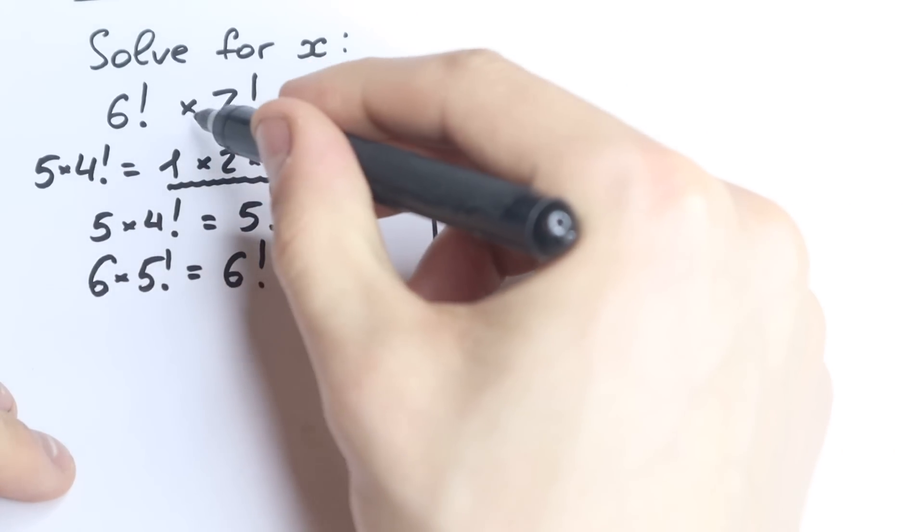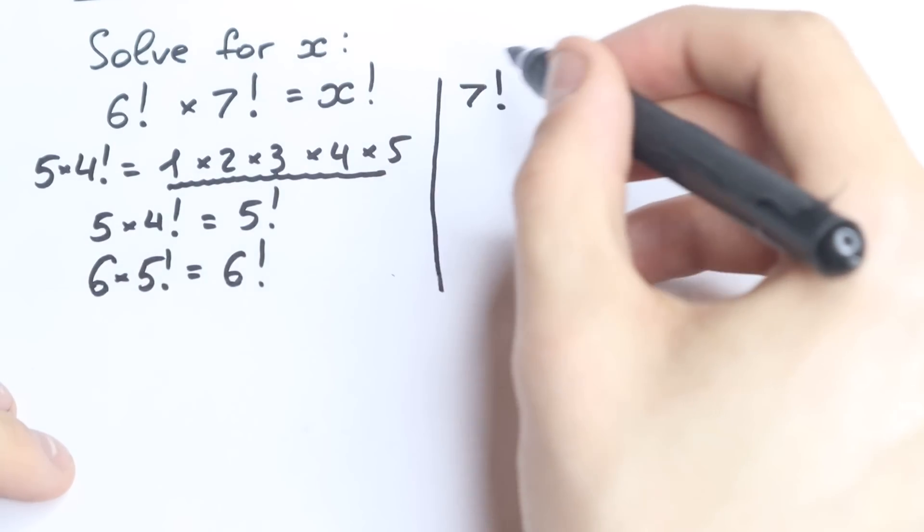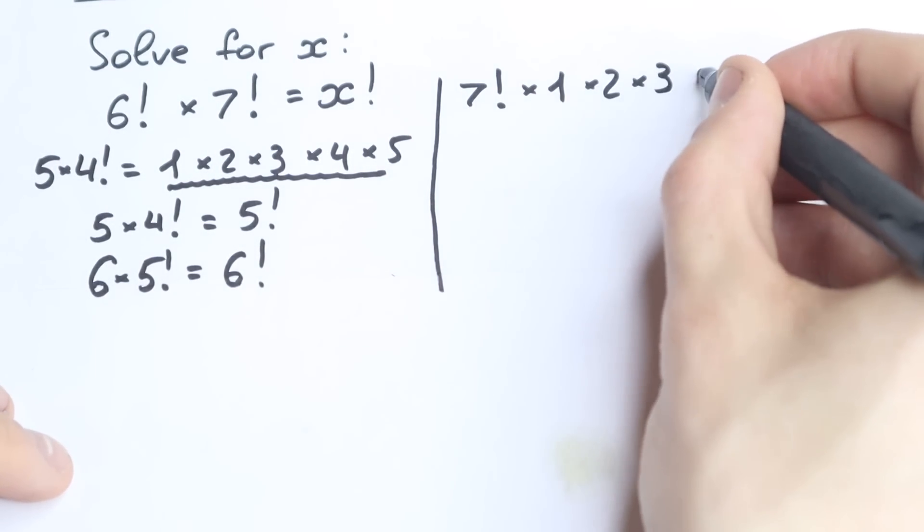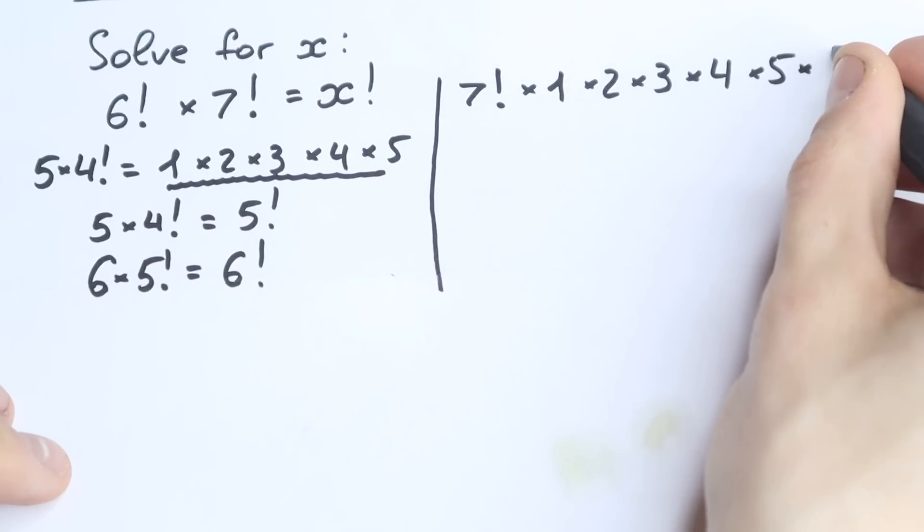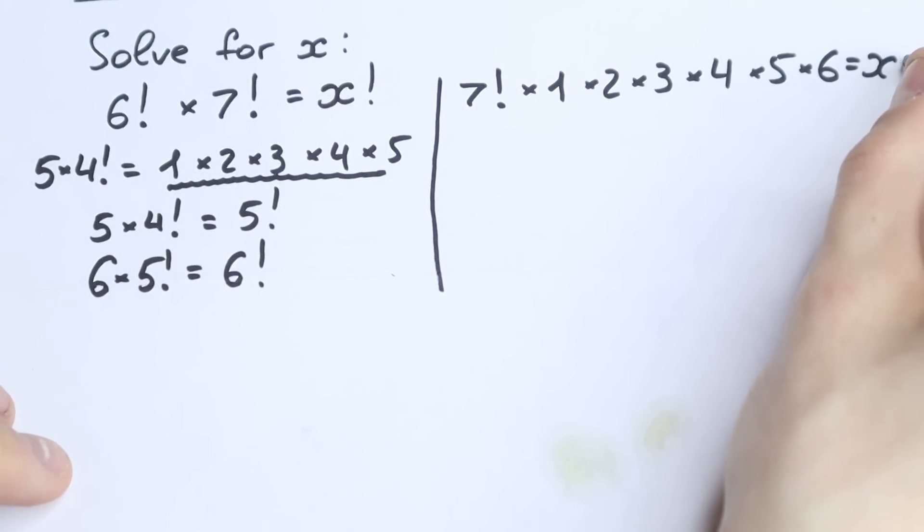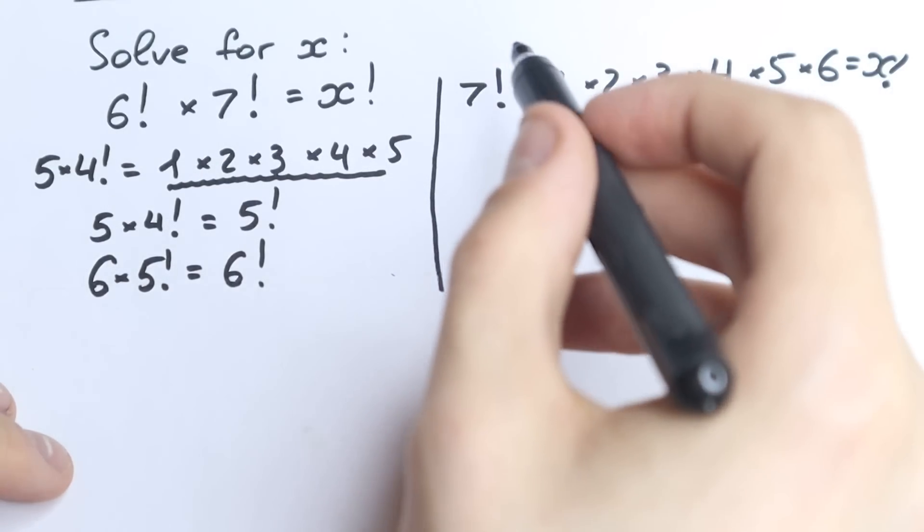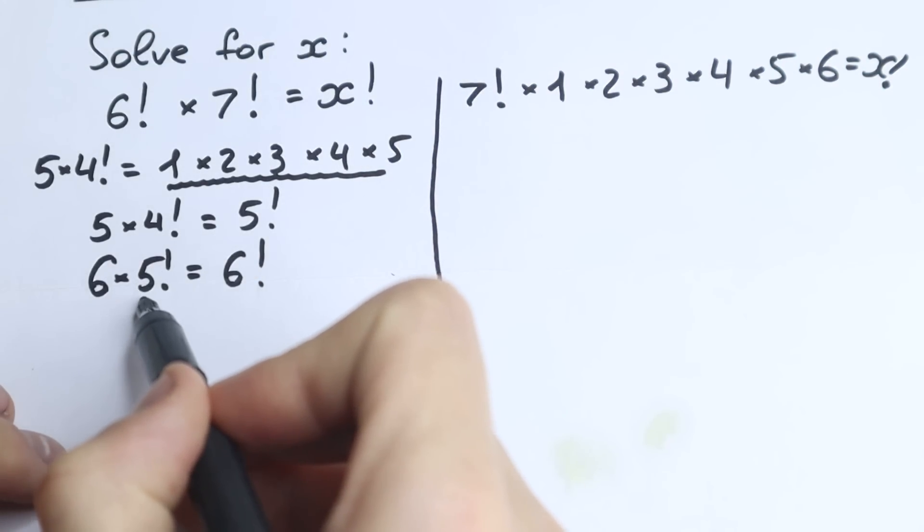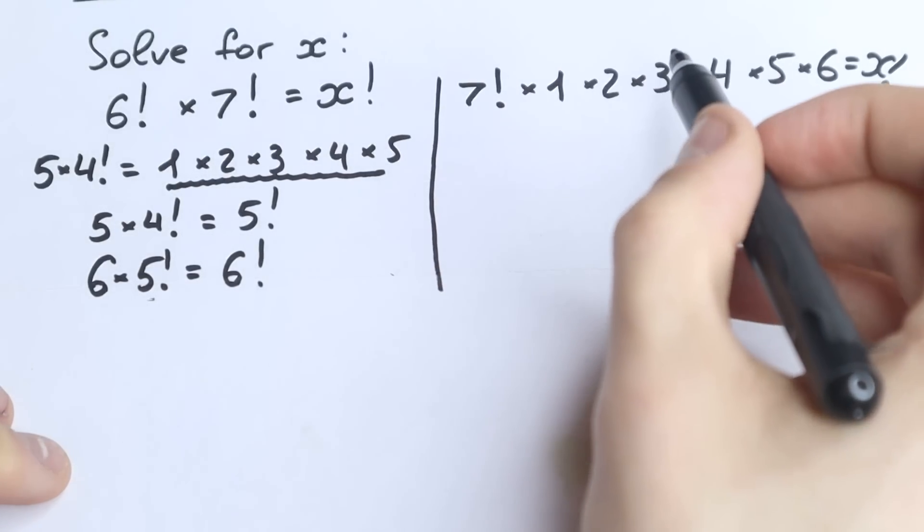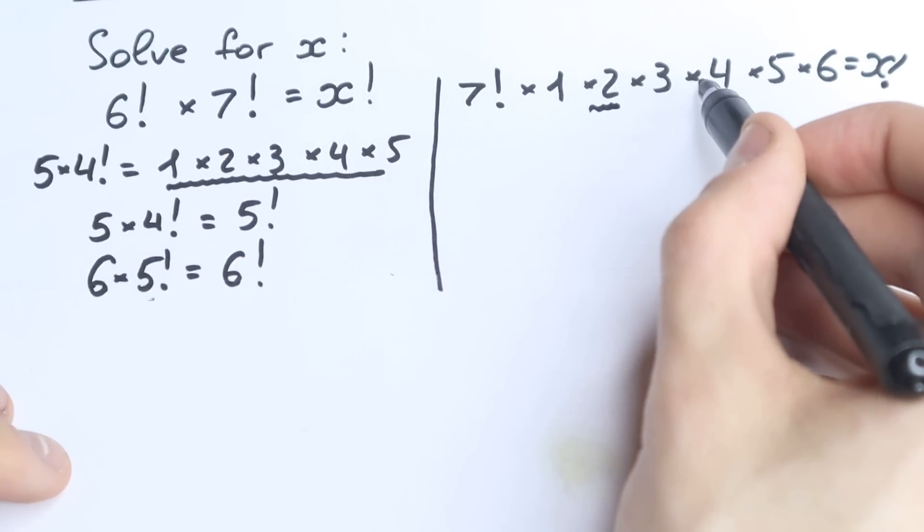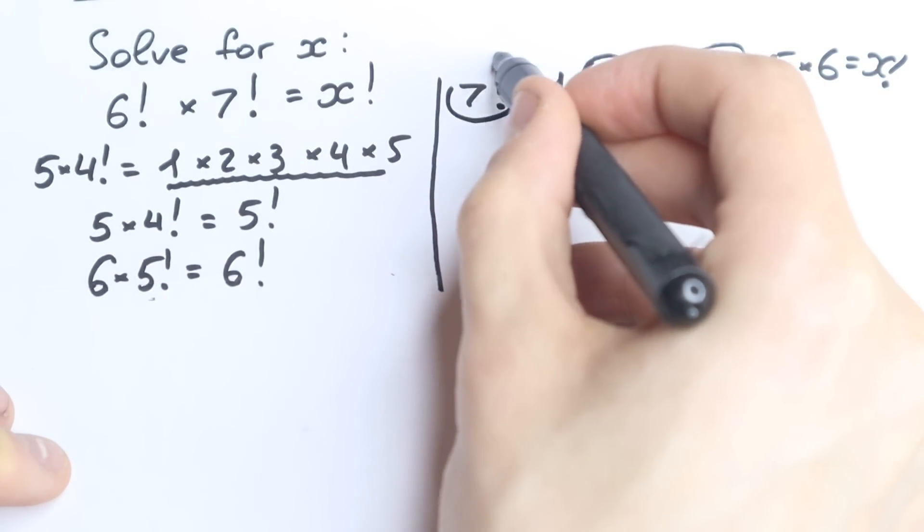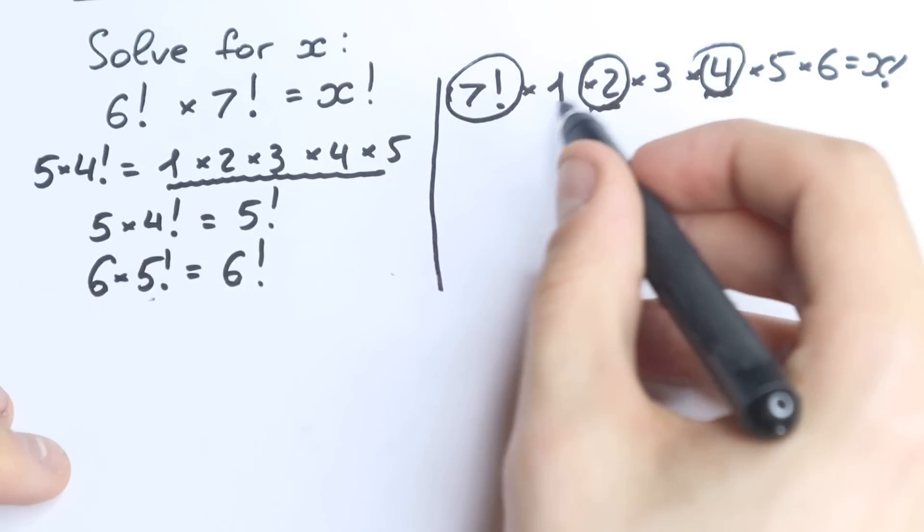So right here let's leave this 7 factorial and let's write 6 factorial as a product. So we have times 1, times 2, times 3, times 4, times 5, and times 6 equal to x factorial. Right now, before the 7 factorial, we need to have greater by 1. So this is 7 factorial. We need to multiply the 7 factorial by 8. So let's find our 8. Let's go with this 2 and this 4. So 2 times 4 equal to 8. So we need this 2, we need this 4, and we need this 7 factorial.